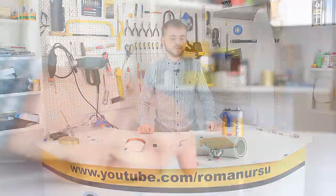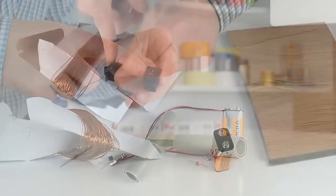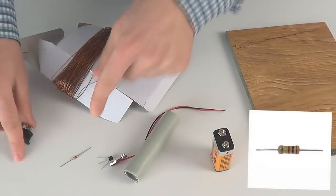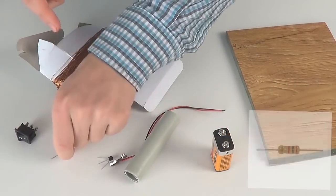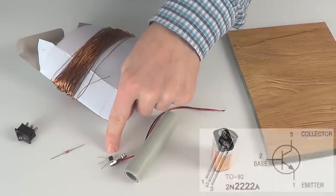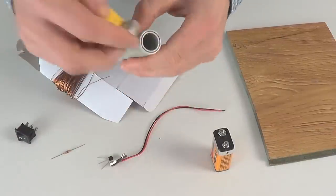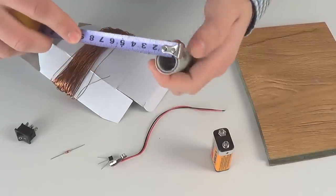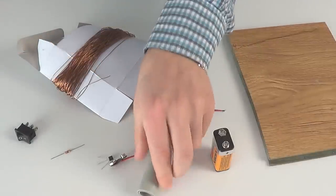What's necessary to build it? In order to make a mini Tesla coil we need one switch, one 22 kOhm resistor and a 2N2222A transistor, a 9V battery connector, one PVC pipe 8.5 cm long and 2 cm in diameter.